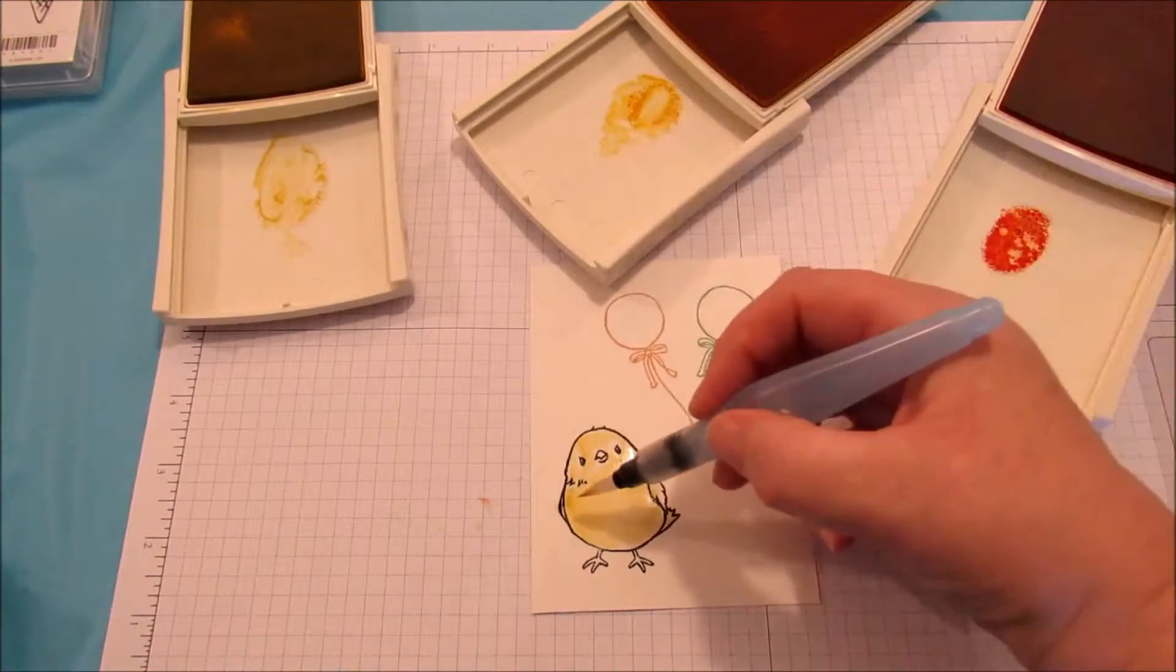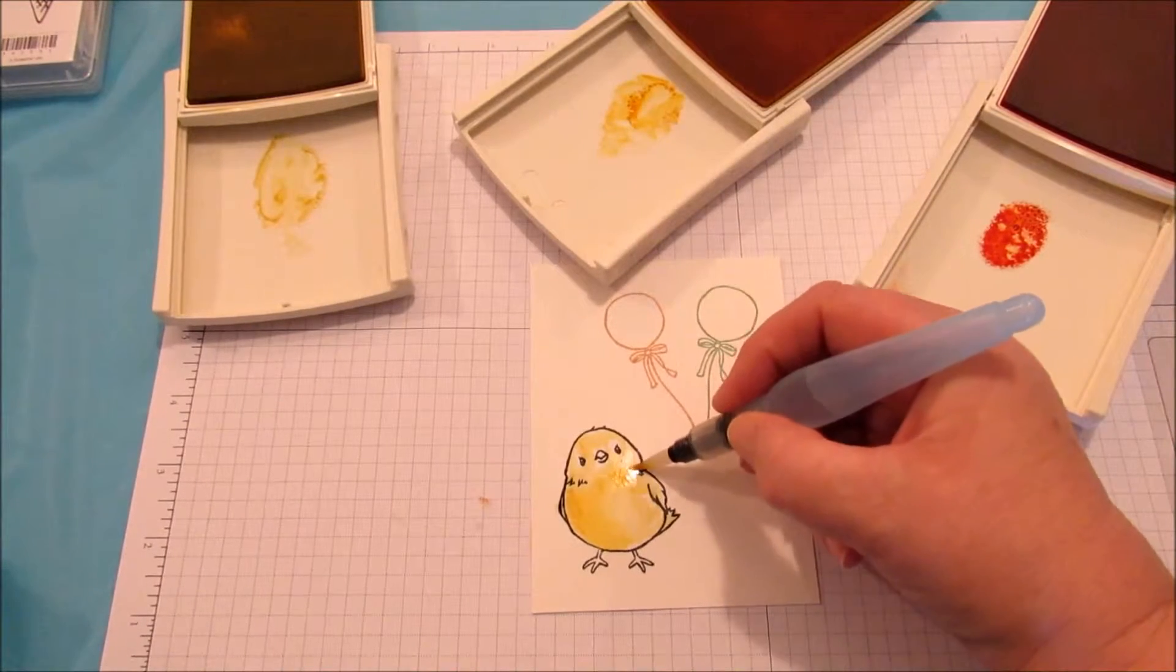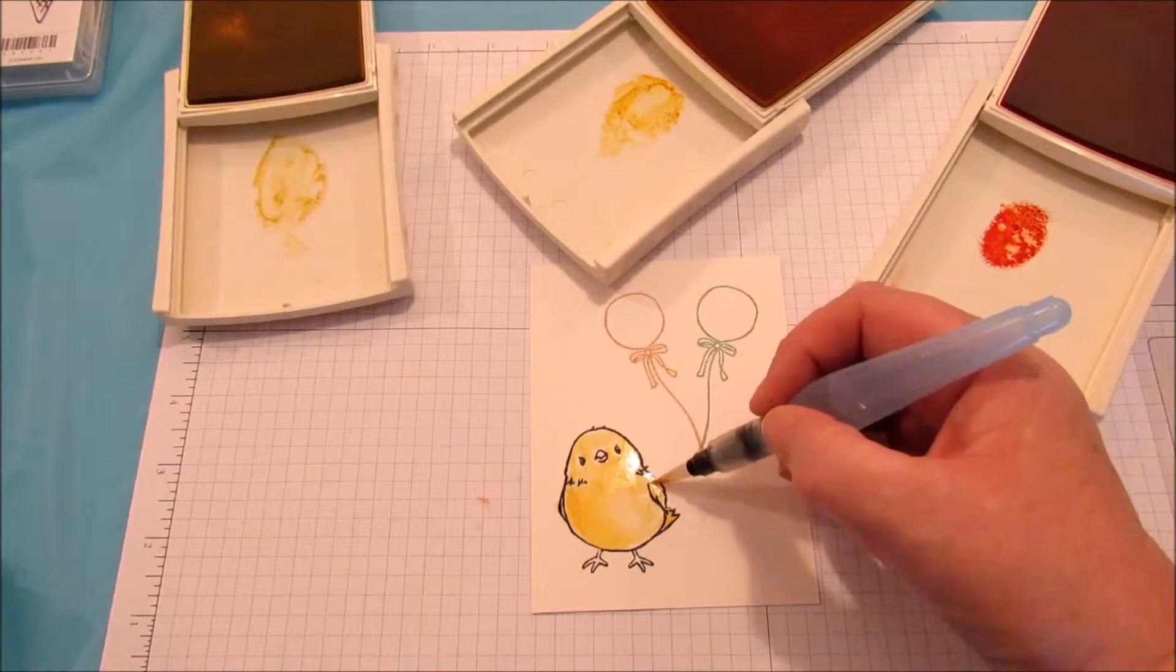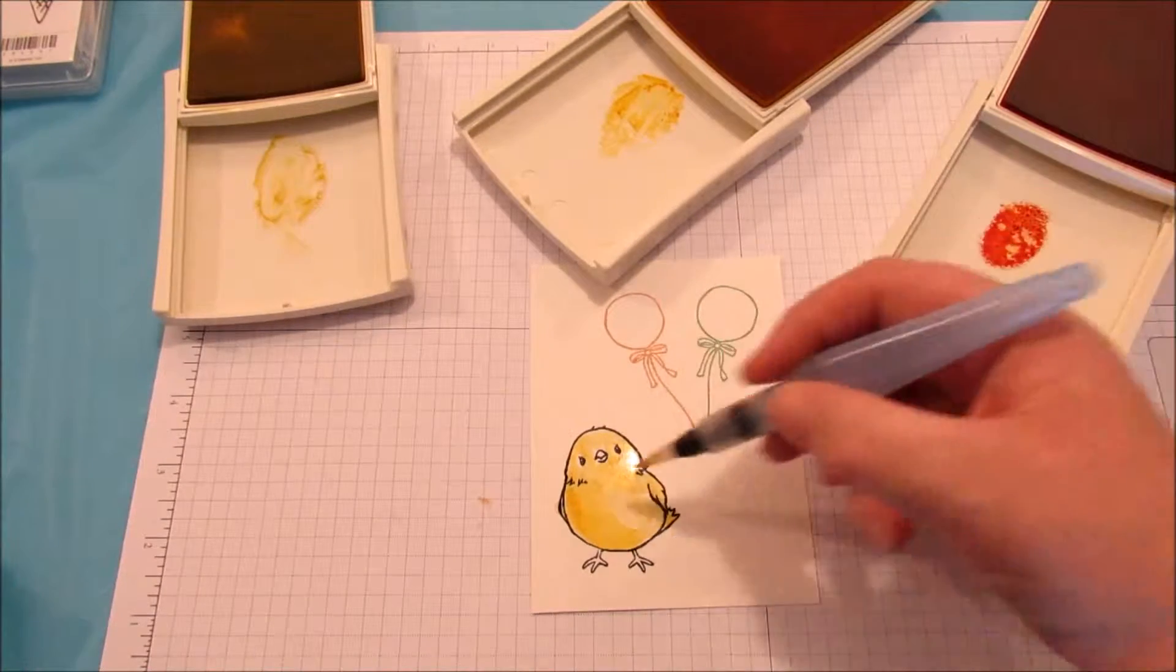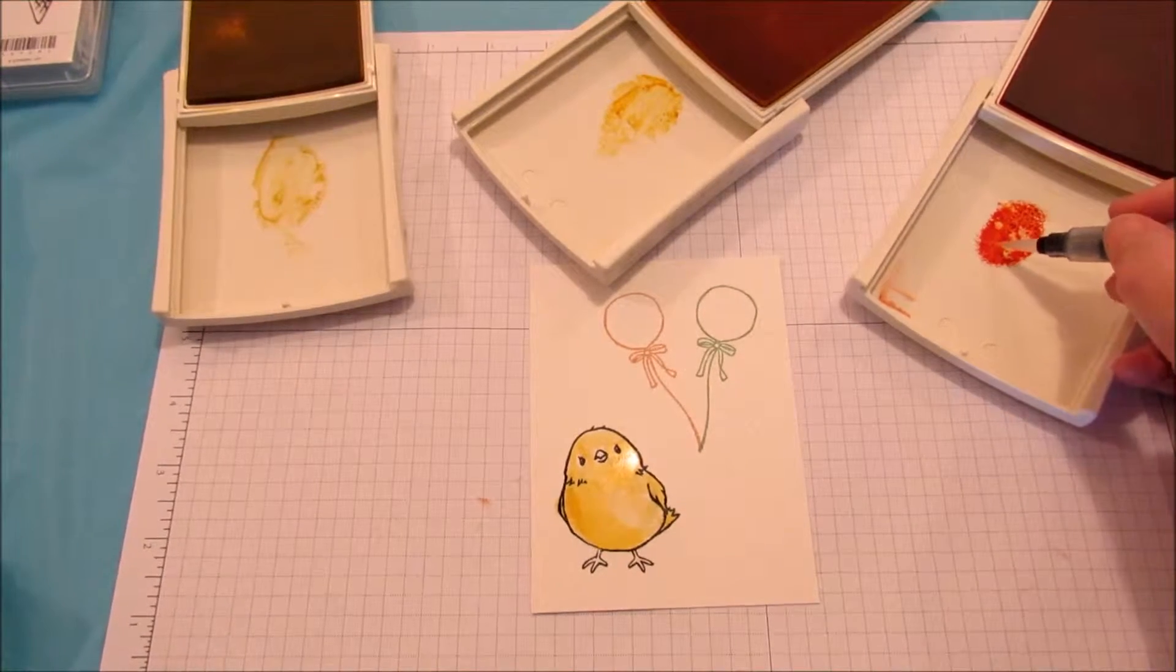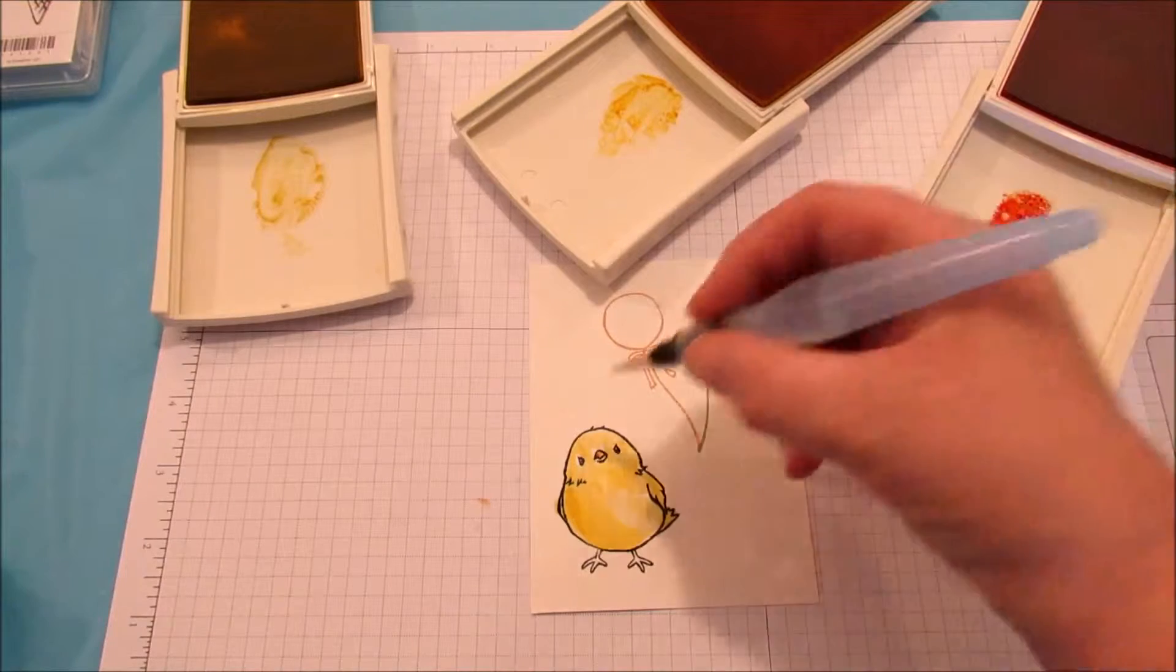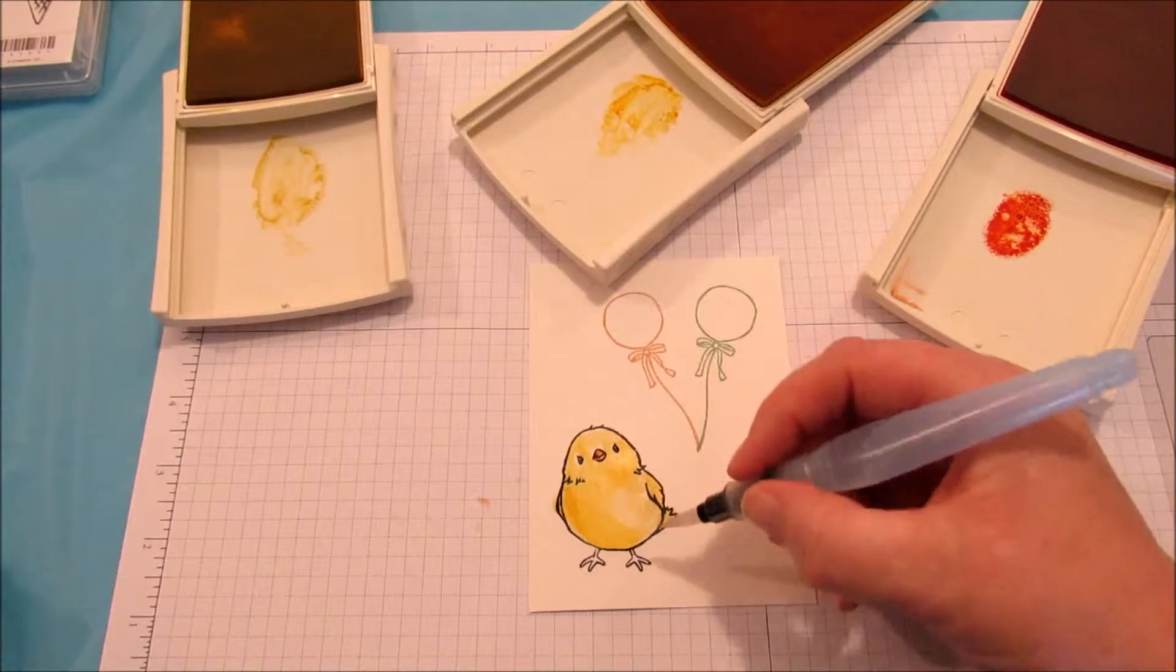Then we're going to take the darker color. Kind of accent a little bit of that. That's good. And now we're going to take the orange. Tangerine Tango. And just fill in the beak. And the feet. I don't know if you can see me if my big fat hand is in the way.